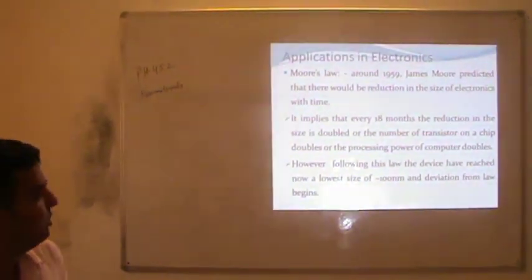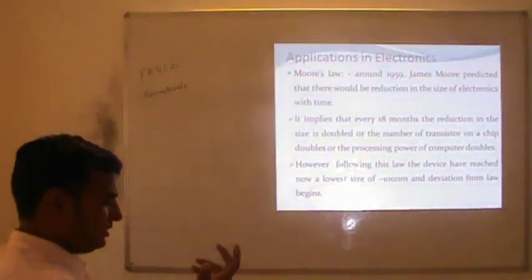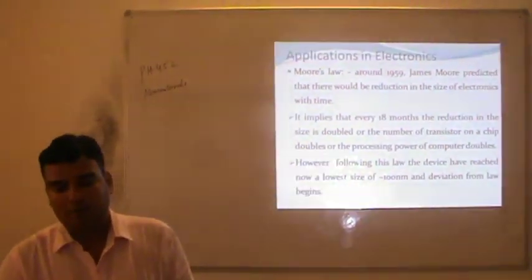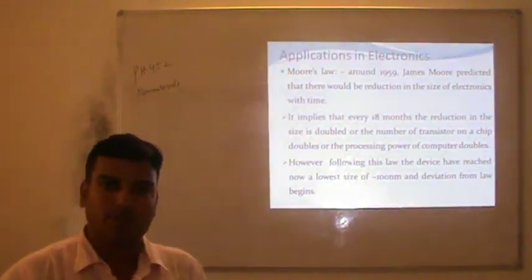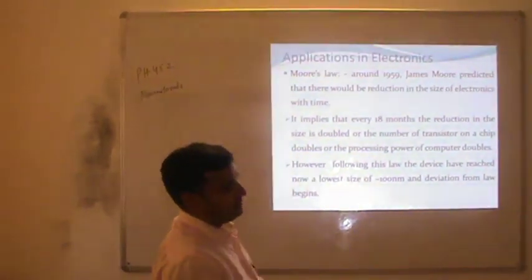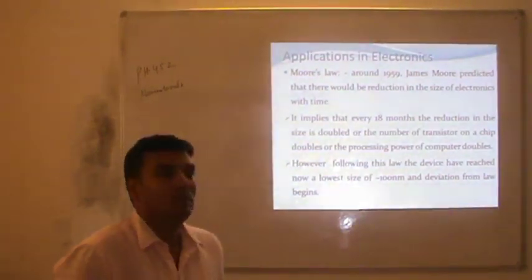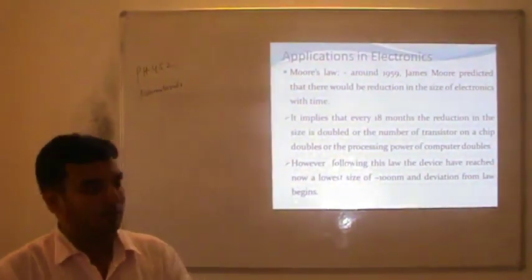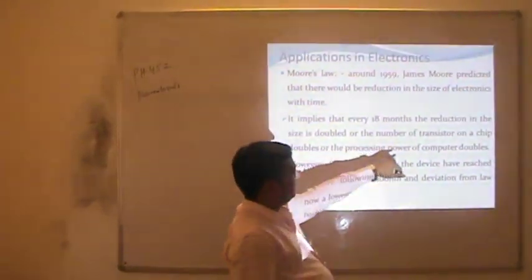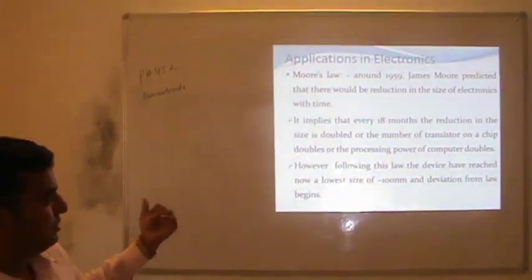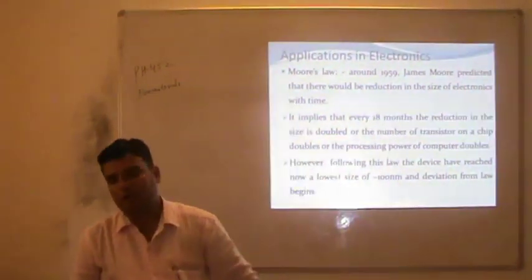According to Moore's Law, every 18 months the reduction in size is doubled. Suppose 100 transistors are fabricated on a chip of one centimeter square. After 18 months, the number increases to 200 while the size of the chip remains the same, or the same 100 transistors may be fabricated on half the size. This is one of the best results: after every 18 months, the computation count is doubled on a particular chip, or the processing power of the computer is doubled.